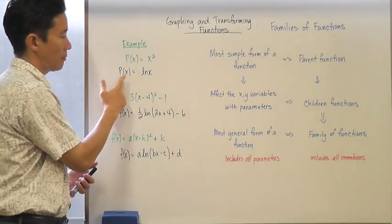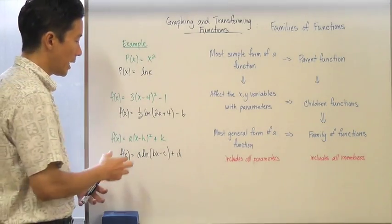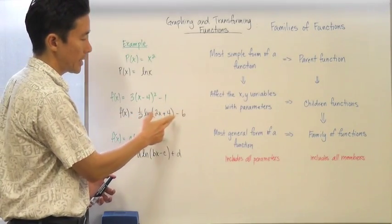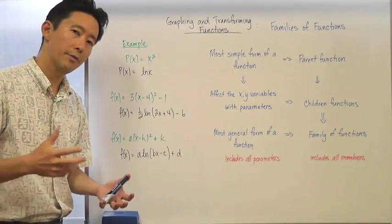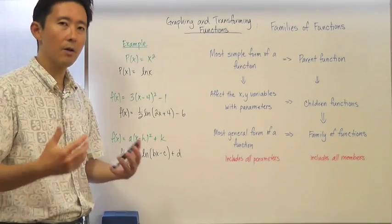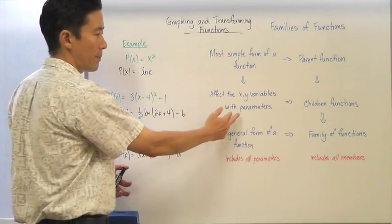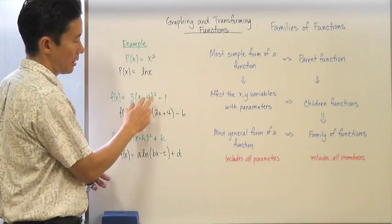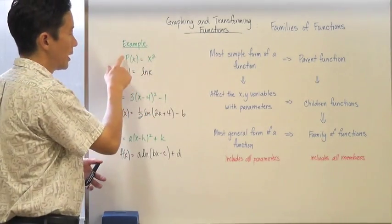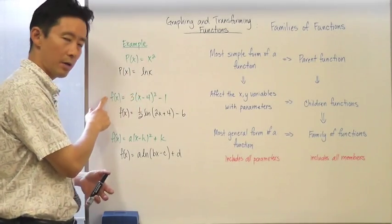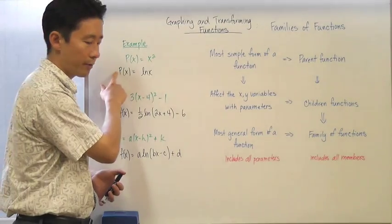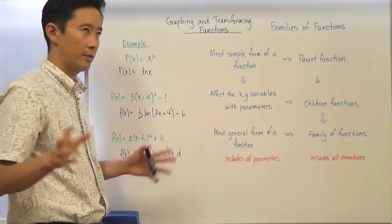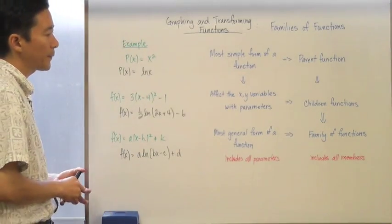With the parent function being ln(x), a child function like f(x) = ½ ln(2x + 4) - 6 is only affecting x and y with different scalar values — those are the parameters. Notice that these child functions are related to their parents: the quadratic child is still quadratic, and the logarithmic child is still logarithmic. They are genetically related.